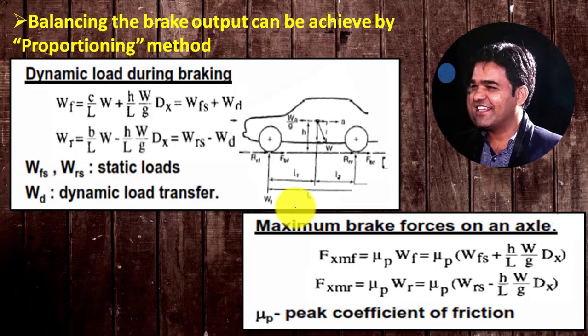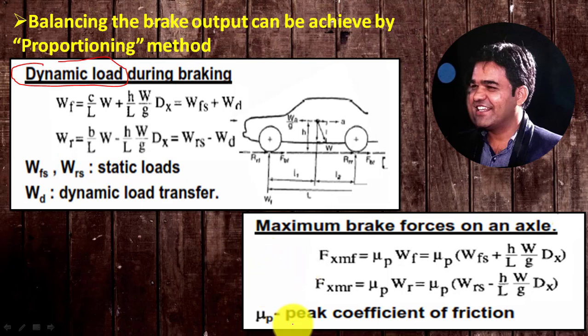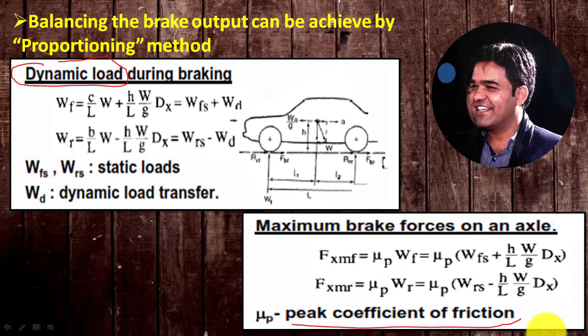Balancing the brake output can be achieved by proportioning methods. To understand the brake proportioning method, we need to understand the traction force available at the ground wheel. This traction force depends on two parameters: first, the dynamic load during braking, and second, the peak coefficient of friction.